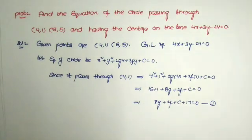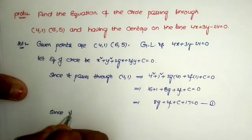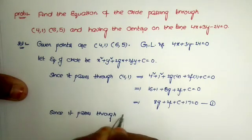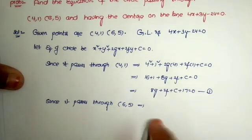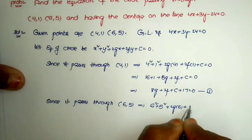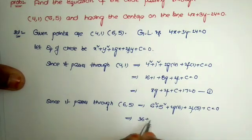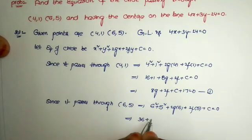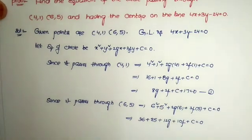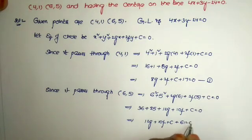Now substituting the second point (6, 5) into the circle equation. Since it passes through (6, 5): 6² + 5² + 2g(6) + 2f(5) + c = 0, giving 36 + 25 + 12g + 10f + c = 0. Therefore, 12g + 10f + c + 61 = 0. This is Equation 2.